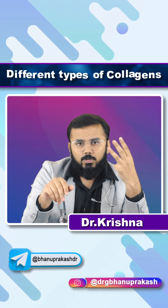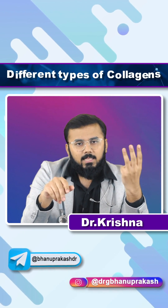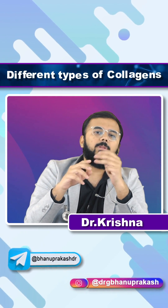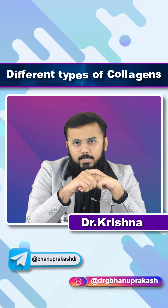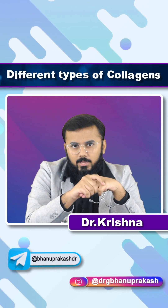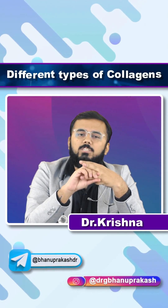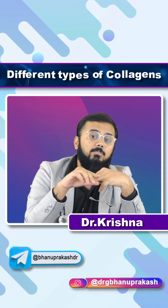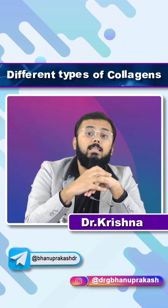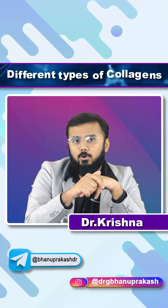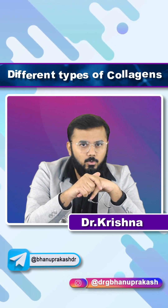Coming to type 3, it is mainly present in the arteries. For example, if type 3 collagen is deficient, that would result in Ehlers-Danlos syndrome.